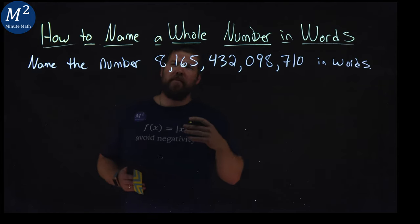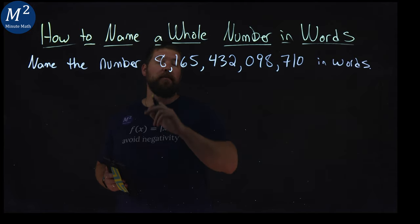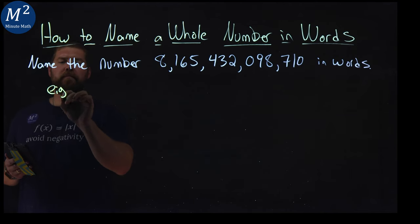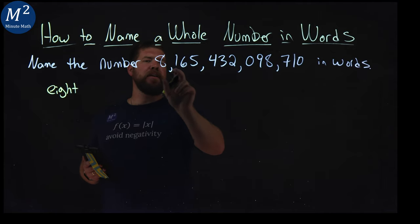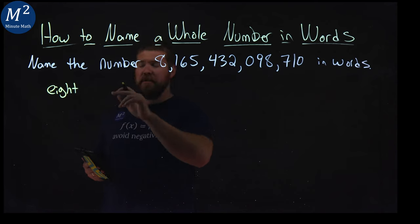When you name numbers in words, we start with the most left value here and that's going to be the 8. So if we start here with 8, we got an 8 there but, like I said earlier, it's in the trillions section. And we only have one of them there. So this is 8 trillion.